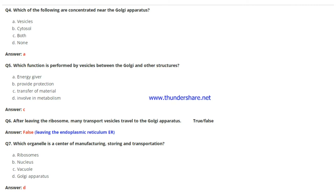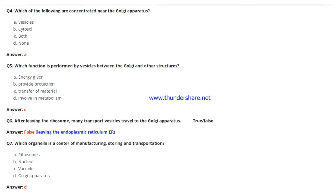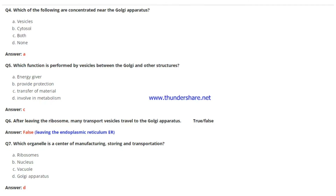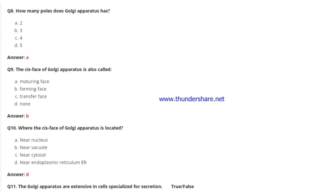Question 6: After leaving the ribosome, many transport vesicles travel to the Golgi apparatus — true or false? This is false; the correct answer is that they leave the endoplasmic reticulum. Question 7: Which organelle is a center of manufacturing, storing, and transportation? The answer is the Golgi apparatus, also known as the post office of the cell. Question 8: How many poles does the Golgi apparatus have? The answer is two.